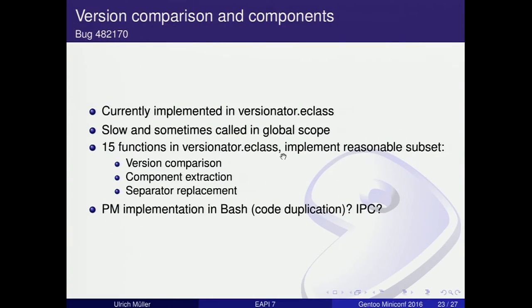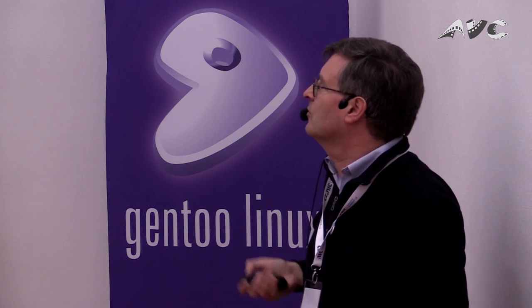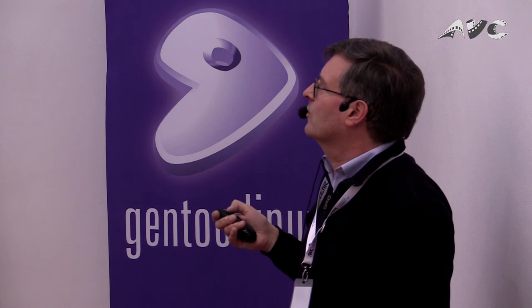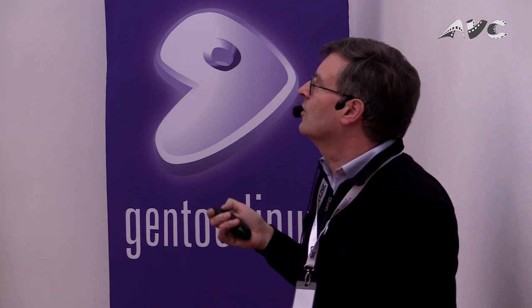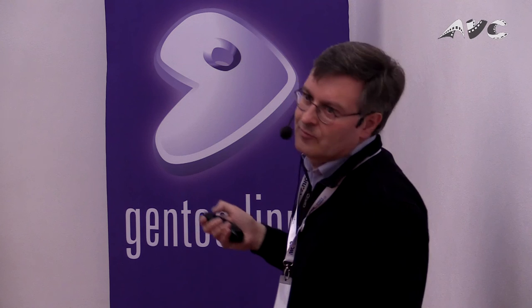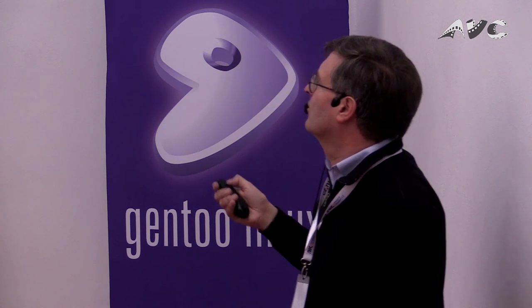I had this last time already: version comparison and components. We have the versionator eclass, but it's slow — implemented in bash, and sometimes called in global scope where you want things to be reasonably fast. We picked three functions — version comparison, version component extraction, and version separator replacement — to implement in the package manager itself. Of course, if we implement it in bash in the package manager, there's code duplication, and probably it needs some inter-process communication.